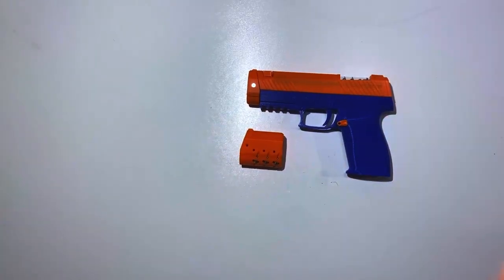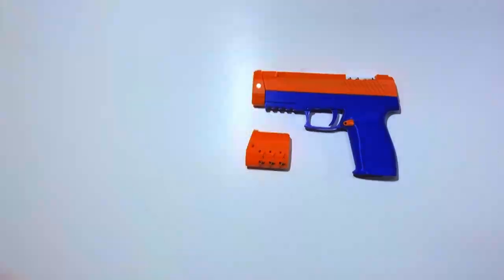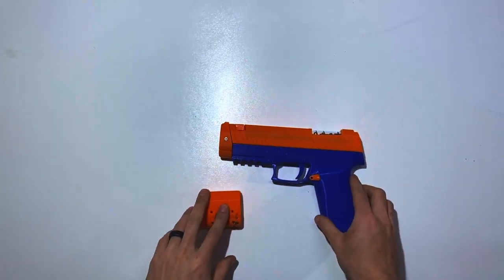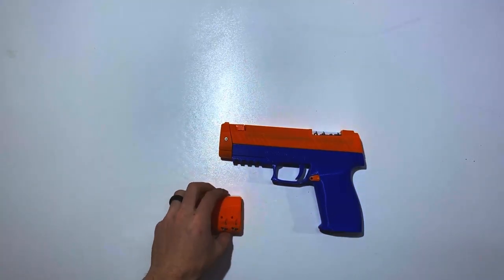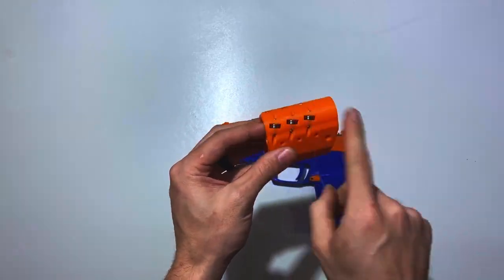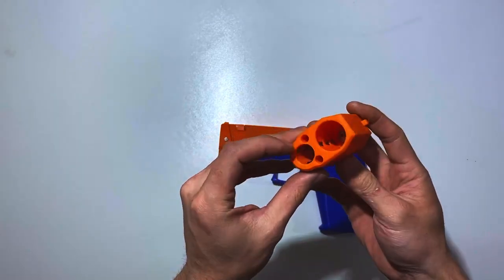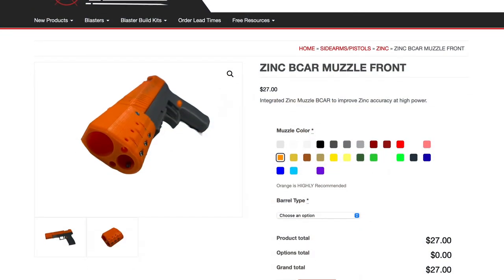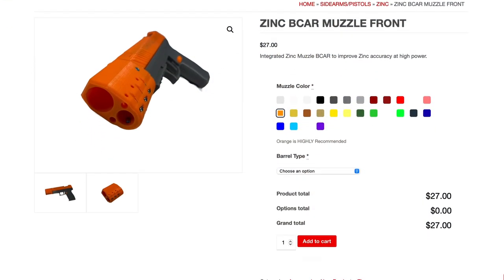This is our Zinc B-CAR installation video. A B-CAR is a centering alignment and rotating device designed for your muzzle. It uses bearing scars already installed with the Zinc thumb nut. If you get it pre-assembled from us, this is what it'll look like.